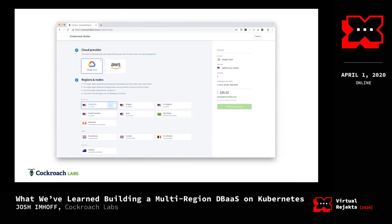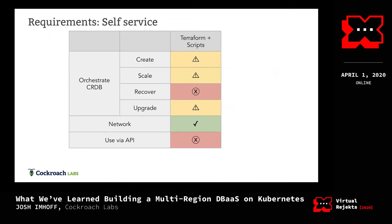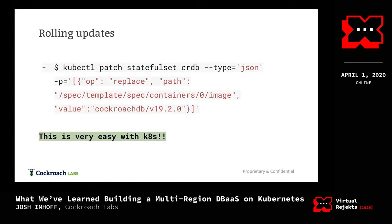The self-service requirement is the one that led us to think strongly about using Kubernetes. We want a service that does all these orchestration tasks, which means we want easy-to-use APIs that let us do orchestration tasks — and that's not really what Terraform and our Go scripty approach gives you. This is what led us to consider Kubernetes, because we know that Kubernetes has these really great APIs: you declare what you want Kubernetes to run, and it handles all the low-level details.